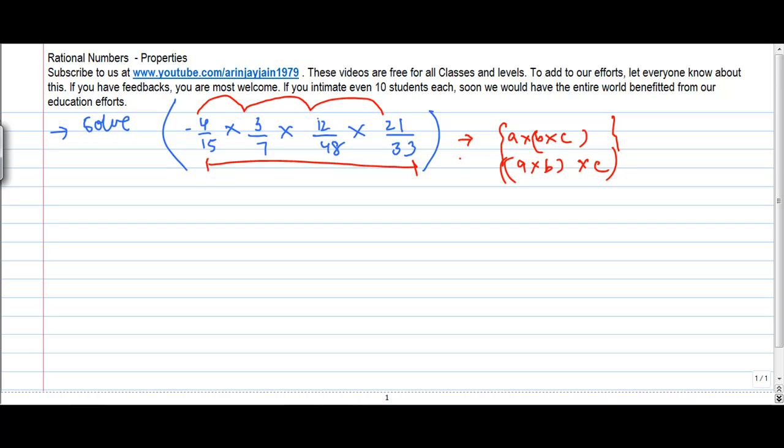So if I change the order, that doesn't really matter. Now I have to see where I can regroup these so I can cancel out numbers and make the multiplication easier.